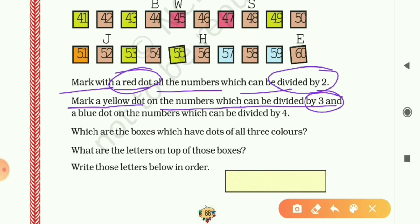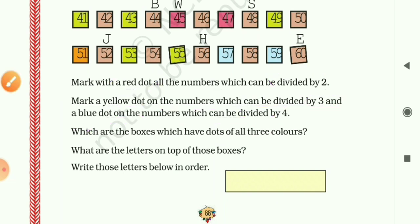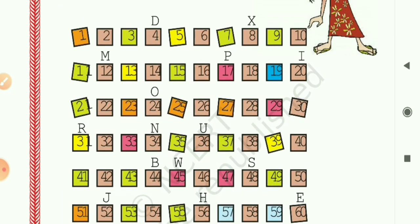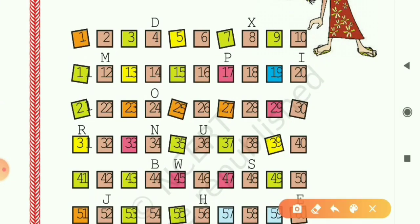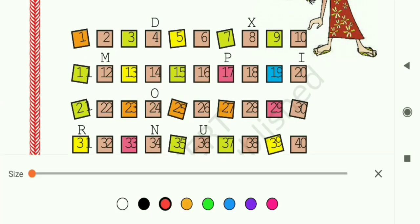For divisibility by 4: if the last two digits of a number are divisible by 4, the whole number is divisible by 4. So we put a red dot for divisibility by 2, a yellow dot for divisibility by 3, and a blue dot for divisibility by 4. Let me take the red color first and begin marking.